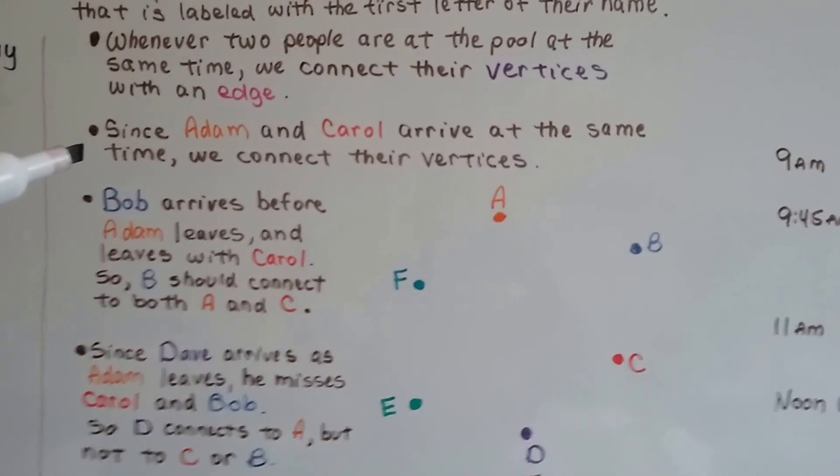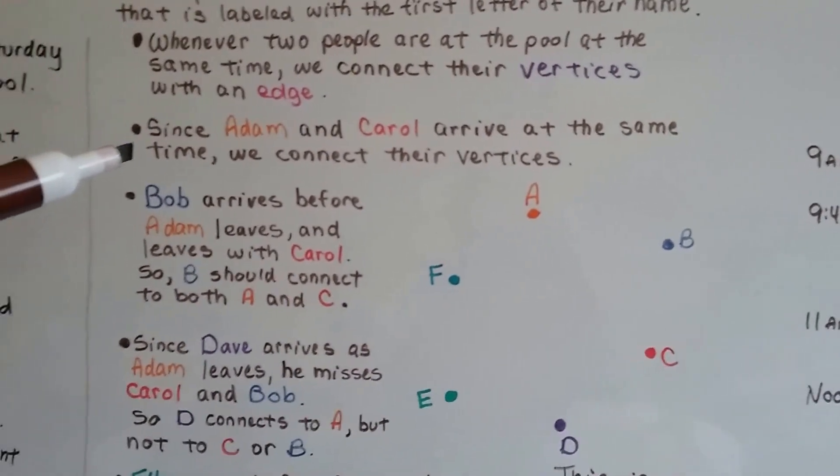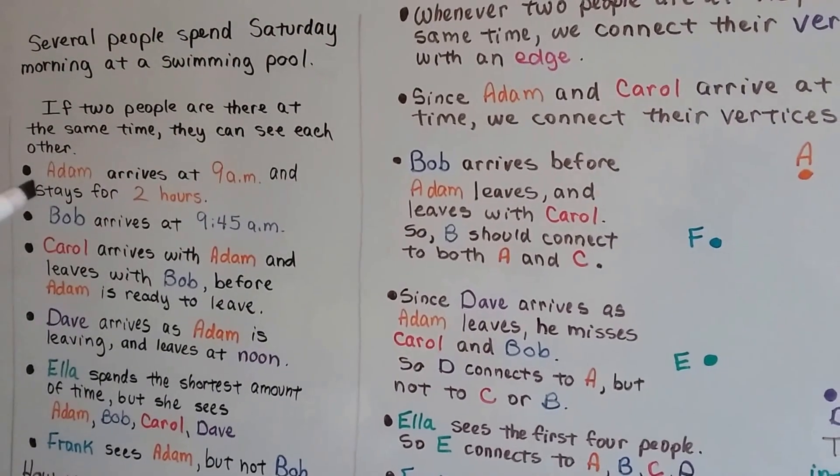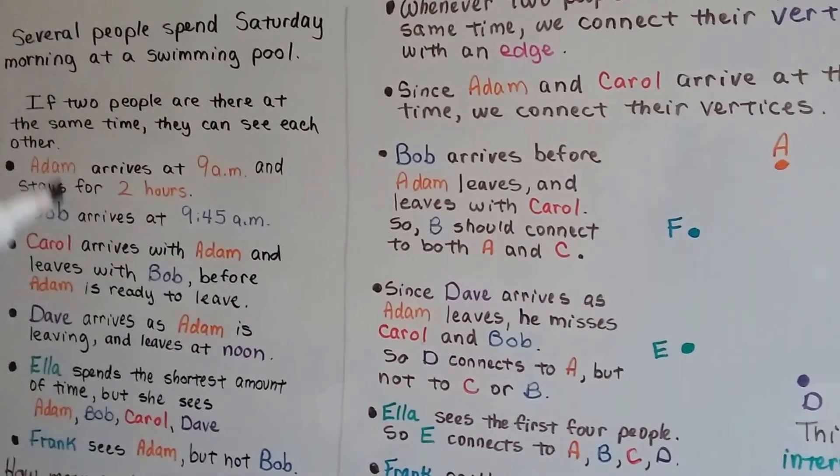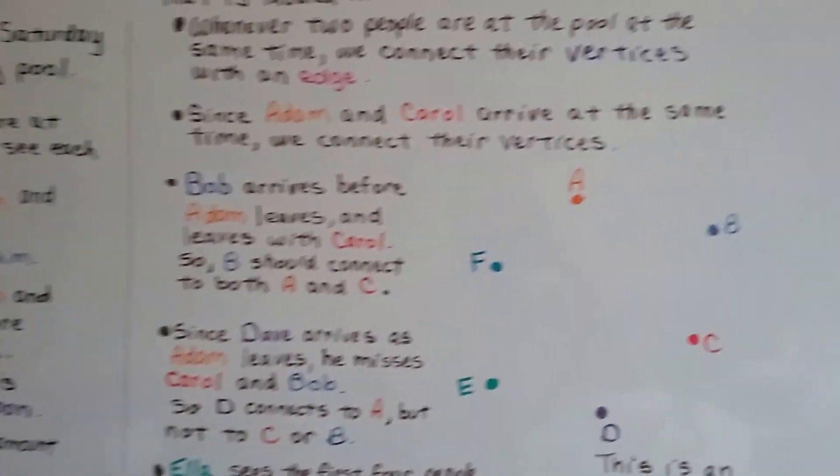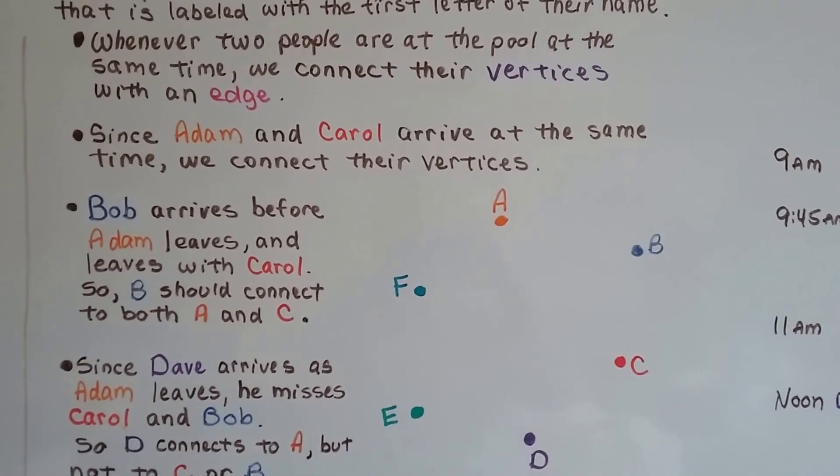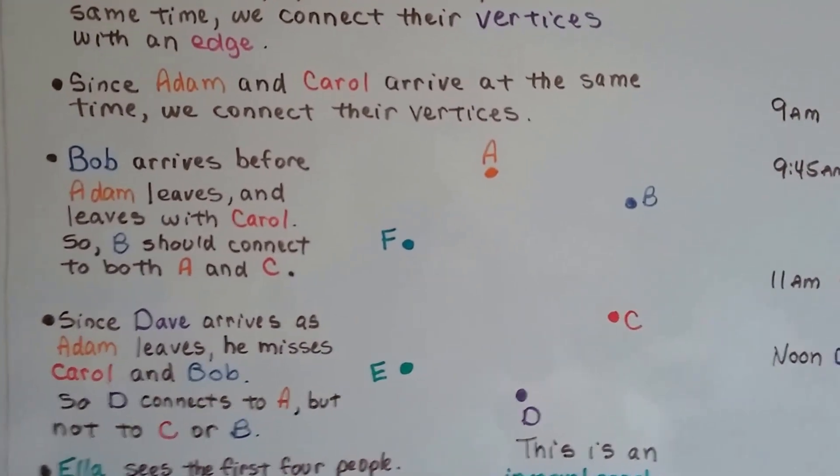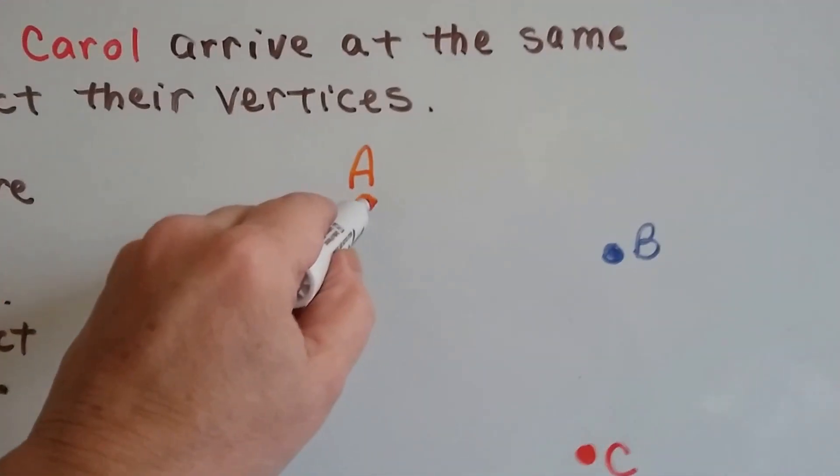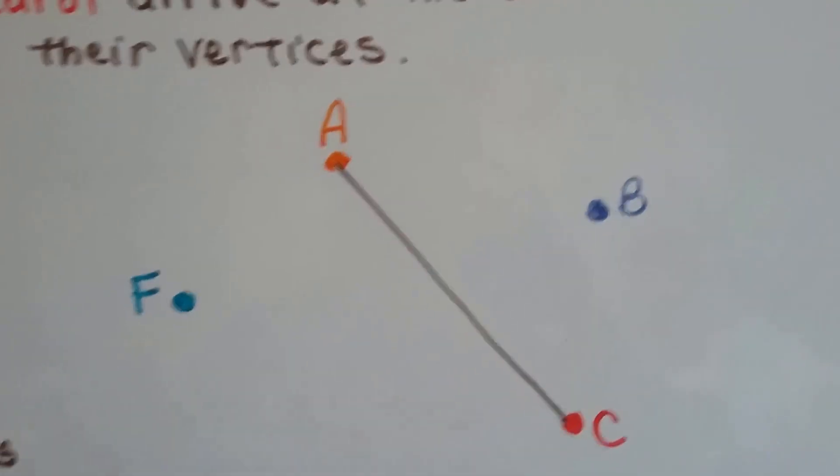Since Adam and Carol arrive at the same time, it says he arrived at 9 a.m. and Carol arrived with him, with Adam. Since they arrive at the same time, we connect their vertices because we know they saw each other. We're going to connect these two.